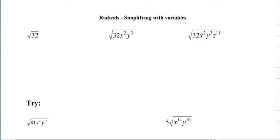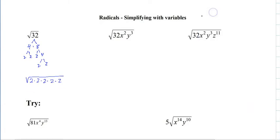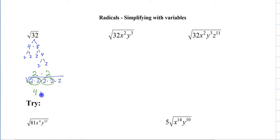This is simplifying radicals again, but now with variables. So just a quick review. Two numbers that give you 32 are 4 and 8, so we always break it down into its prime factors. Put them in the radical — there are 5 of them. With radicals, we're looking for groups of 2; it's asking what number times itself. So we can take out two 2's, and 2 times 2 is 4. Everything here is multiplication. And there's our answer: 4 square root of 2.